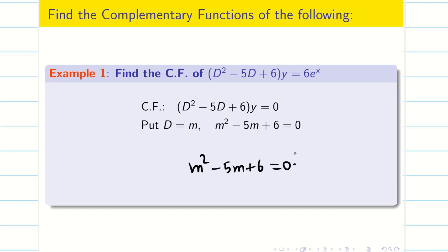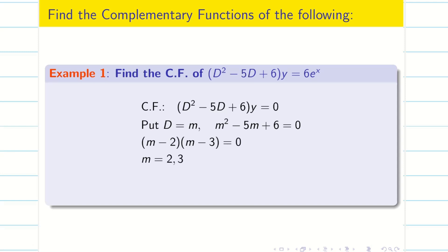Remember, students, use your calculator to find the roots. Unless it is a complex root, the calculator will give the exact answer. You know how to find roots for a quadratic or cubic equation using your calculator; if not, go to unit one and watch the calculator trick. This factors as (m − 3)(m − 2) = 0, so the roots are 2 and 3 — real and distinct — giving CF = a·e^(2x) + b·e^(3x).